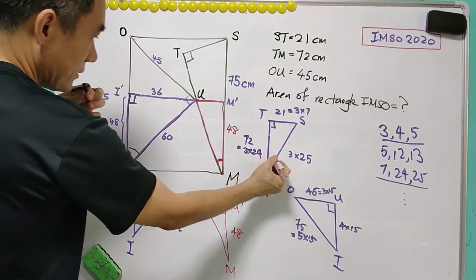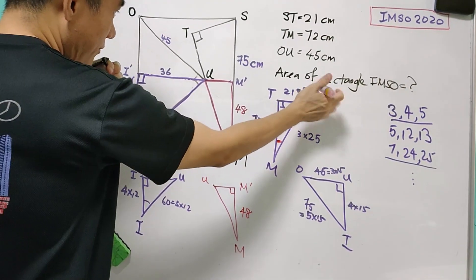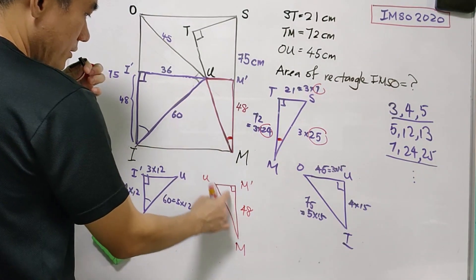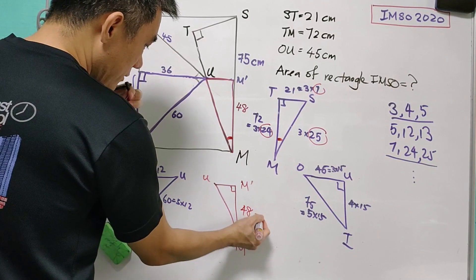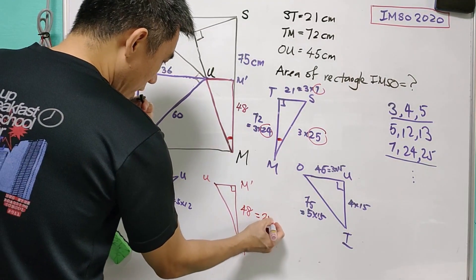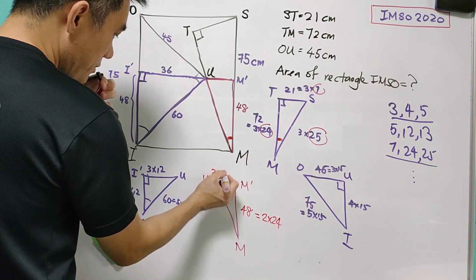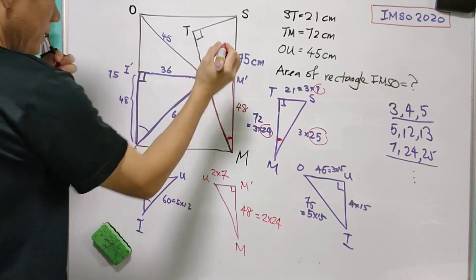For this angle, we know that it should be 7-24-25. And 48 is 2 times 24, so this should be 2 times 7. Therefore, UM' equals 14.